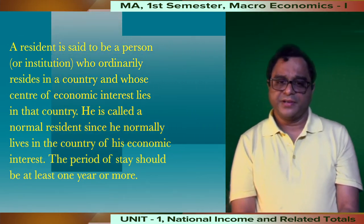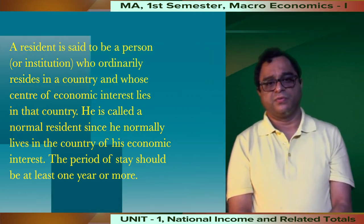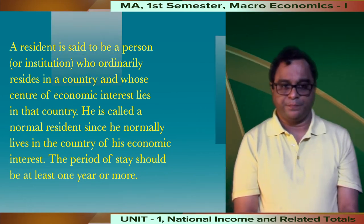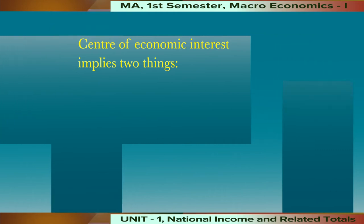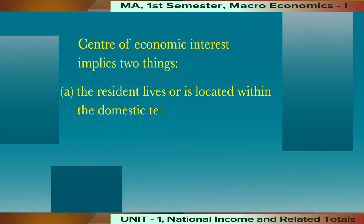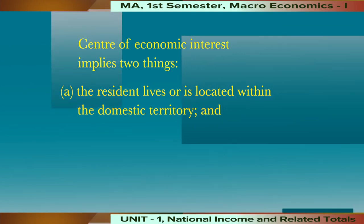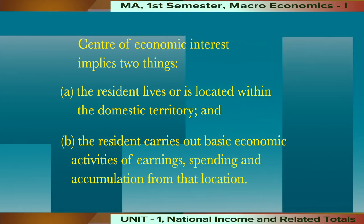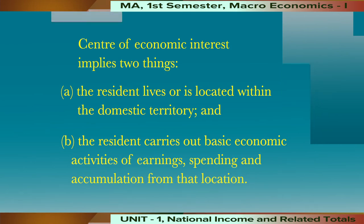He is called a normal resident since he normally lives in the country of his economic interest. The period of stay should be at least one year or more. Center of economic interest implies two things: A) the resident lives or is located within the domestic territory, and B) the resident carries out basic economic activities of earnings, spending, and accumulation from that location.